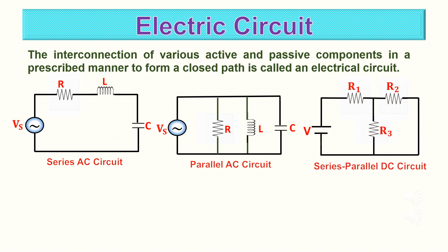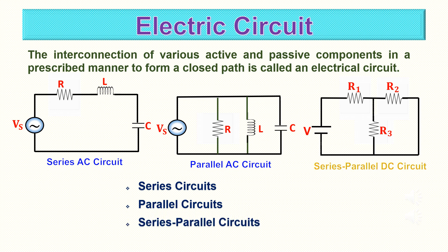The interconnection of various active and passive components in a prescribed manner to form a closed path is called an electrical circuit. A combination of DC source and passive components is called a DC circuit. A combination of AC source and passive components is called an AC circuit.